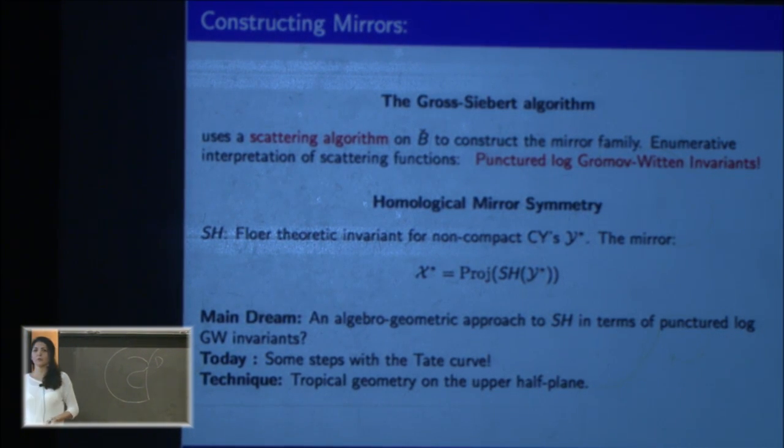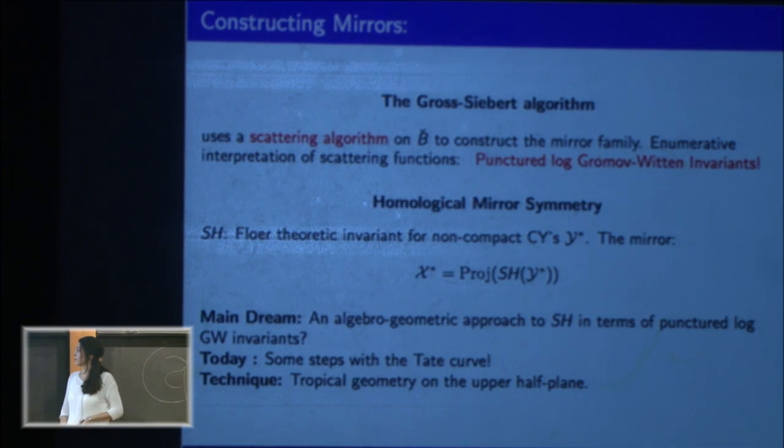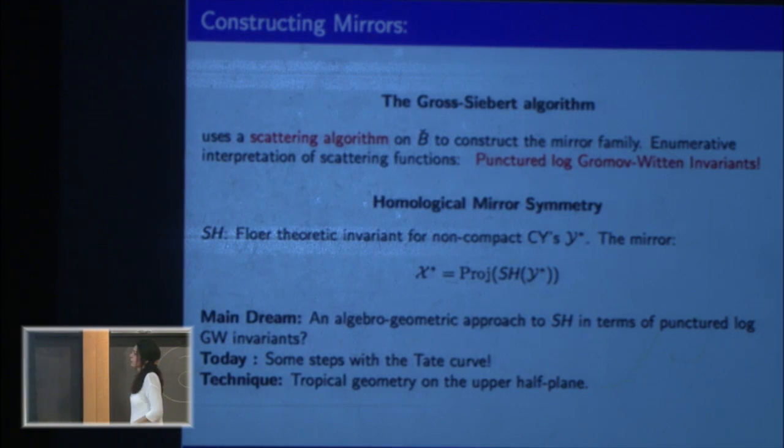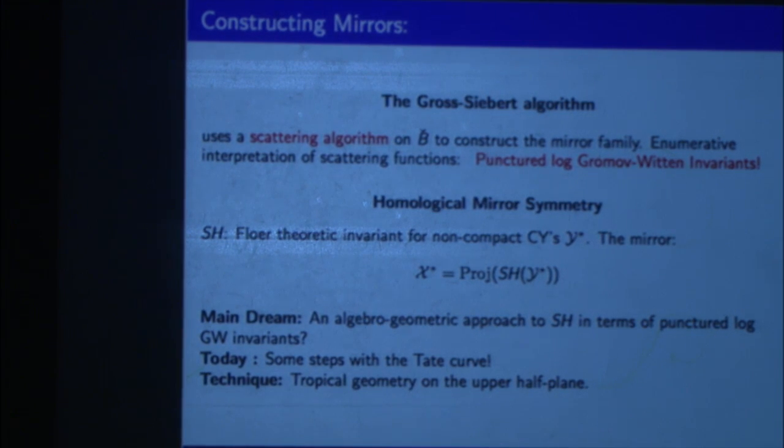And there is an alternative mirror construction proposed by homological mirror symmetry, which I will not talk too much about. It roughly proposes that if you have some non-compact Calabi-Yau, you can construct a ring called the symplectic cohomology ring, which gives some Floer theoretic invariants, and take the Jacobian of this ring to construct your mirror. There are a lot of people doing symplectic cohomology: the inventors, Paul Seidel, and many other people, Mohammed Abouzaid. There are many people who know a lot more, very well about it, so I'm not going to talk much.